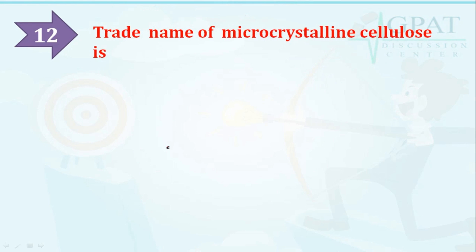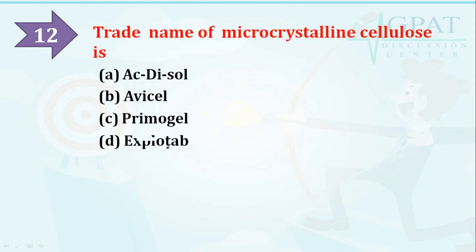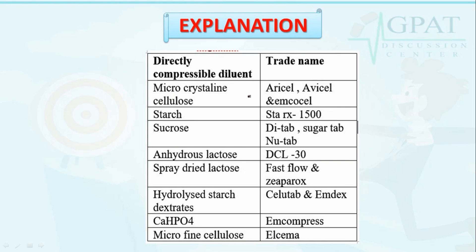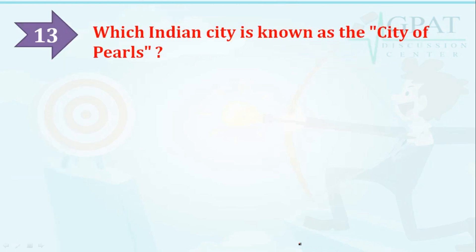Question number twelve: the trade name of microcrystalline cellulose is — the right option is Avicel. Various trade names: microcrystalline cellulose can be Avicel, AV cell, or Emcocel; starch is Starch RX 1500, Superose, Dytab; sugars include Sugartab, Nutab; anhydrous lactose DCL 30, spray-dried lactose Fast Flo; hydrolyzed starch dextrates — Emdex and Candex; calcium hydrogen phosphate — Emcompress; microcrystalline cellulose L — Elcema. A separate video on trade names is also available.